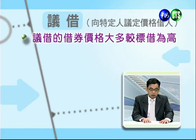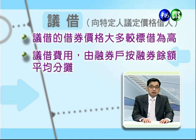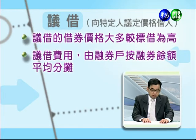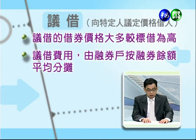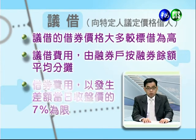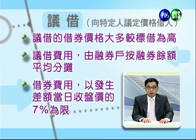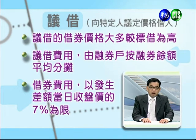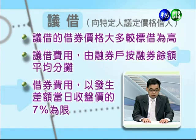如果标借还不足，就可以用第二个方法议借：向特定人预定价格借入股票。当标借不足时，向大股东以议定价格借用股票交割。标借是公开征求，价格比较低的先得；只有在标借不足时才能采取议借方式。议借的费价大都高于标借，费用以发生差额当天收盘价的7%为标准，由融资户按融资余额平均分摊。